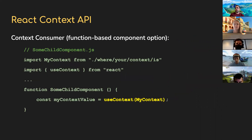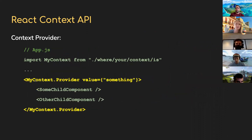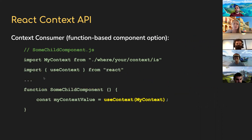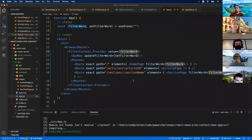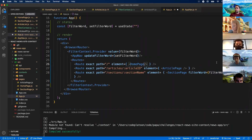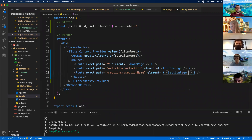That was step two — supplying a provider in app.js. Step three is consuming the data. I'm going to use option number two for functional components — useContext. useContext comes from React. Now Homepage and SectionPage no longer need the filterWord prop — so I need to delete those prop values from app.js. No more props for filterWord being passed down.